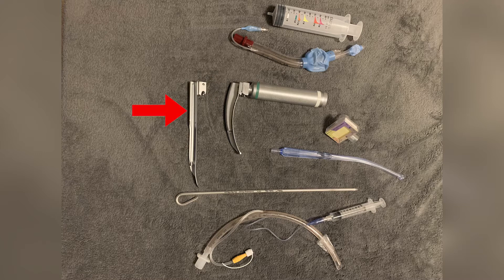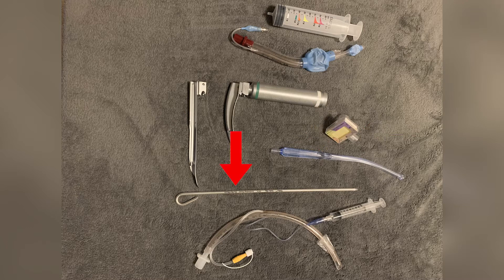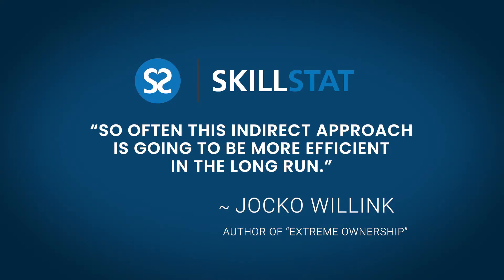a Miller blade, the Yankauer suction, the end-tidal CO2 detector, a malleable stylet, and the endotracheal tube with a syringe for the inflation of the cuff. Above that is the KingTube Superglottic Rescue with the KingTube syringe.